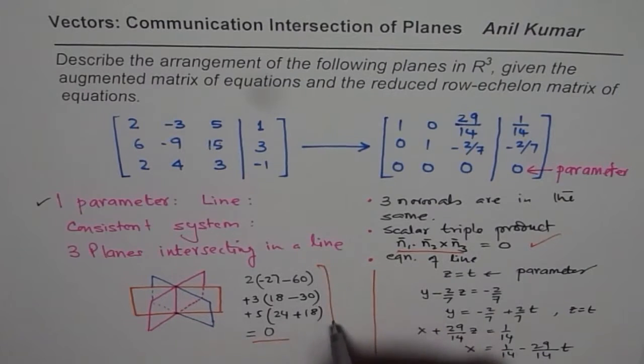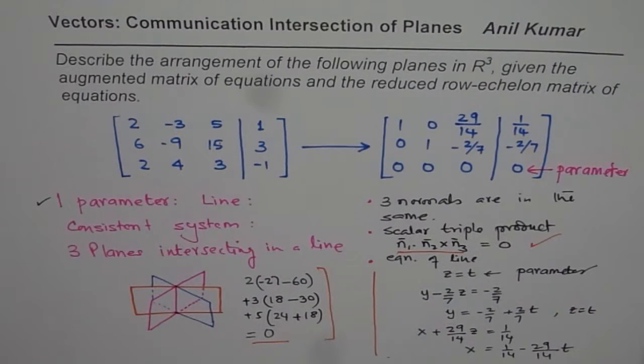This is what we just proved. That is the scalar triple product, which is 0.